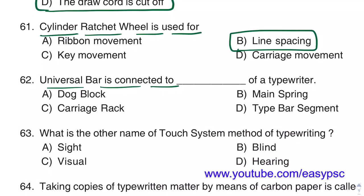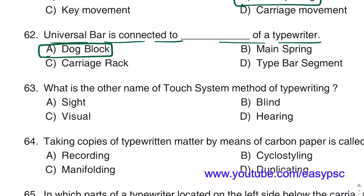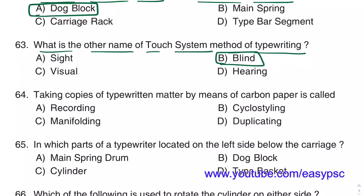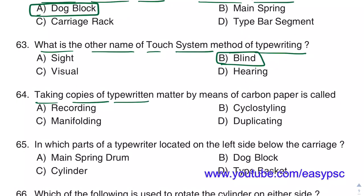The Universal bar is connected to the Dog block of a typewriter. The other name of the touch system method of typewriting is Blind. Taking copies of typewritten matter by means of carbon paper is called Manifolding.